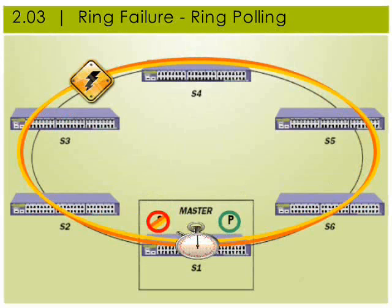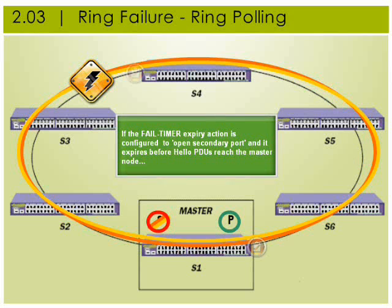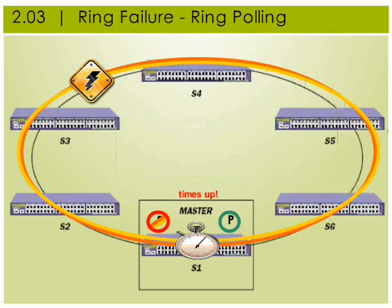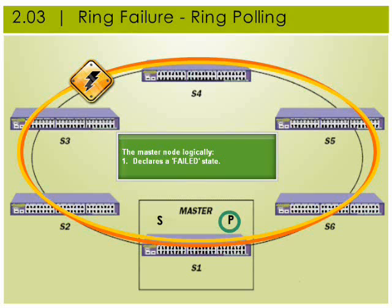EAPS also has a fail-safe mechanism for detecting failures. Both the fail timer and the hello timers are configurable, as is the action to be taken if the fail timer expires. The default action is to send an alert, but it can be configured to open the secondary port. If the master node is configured to open the secondary port on timer expiration and does not receive the health check frame or a link down alert before the fail period timer expires, the master node moves from a complete state to a failed state and opens its secondary port.